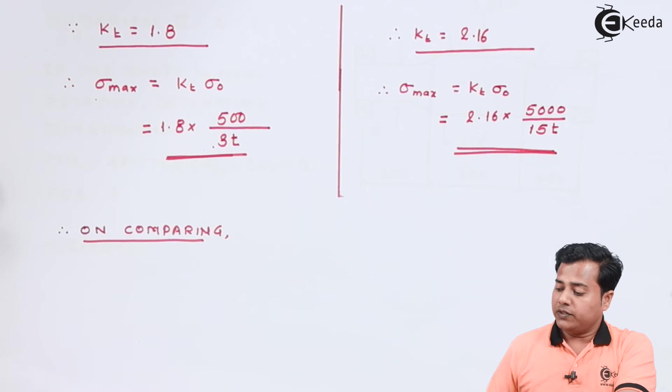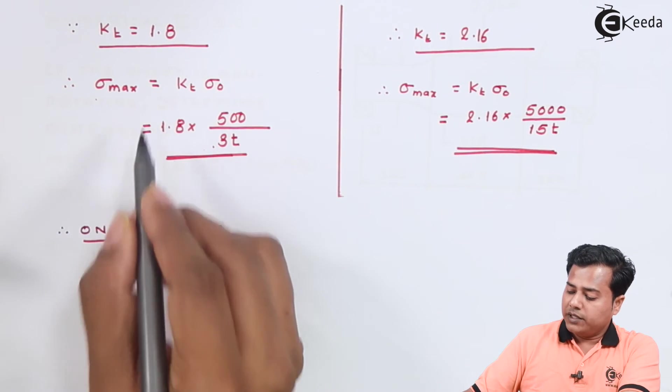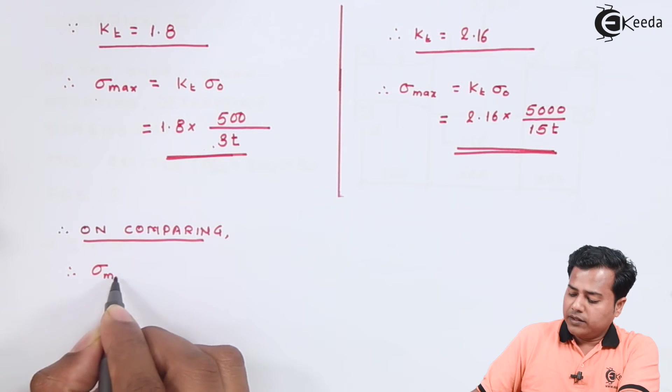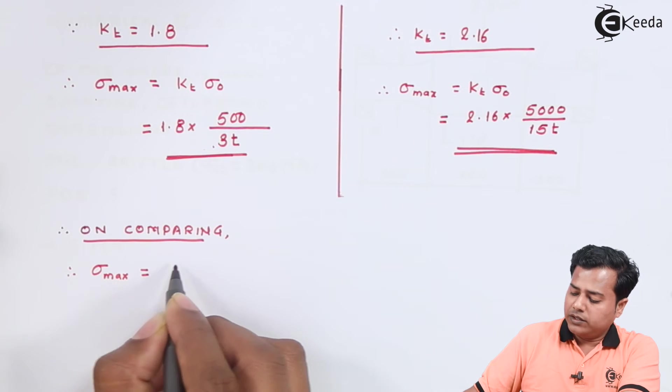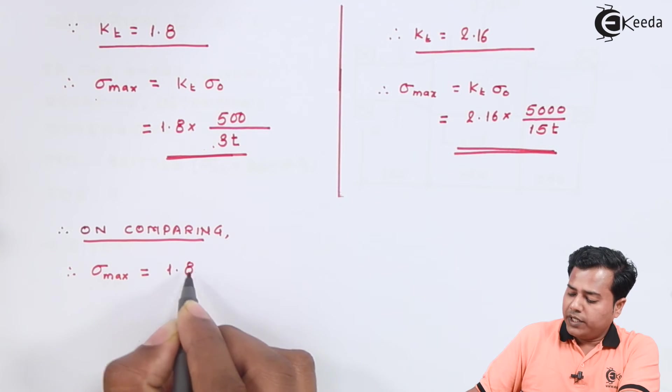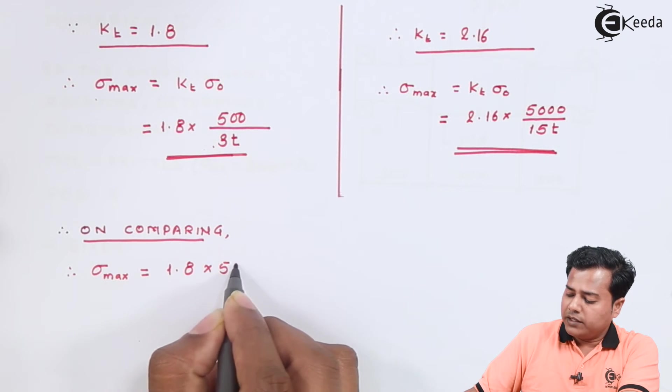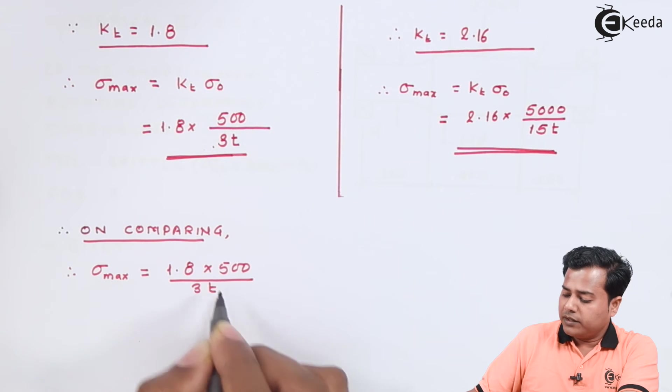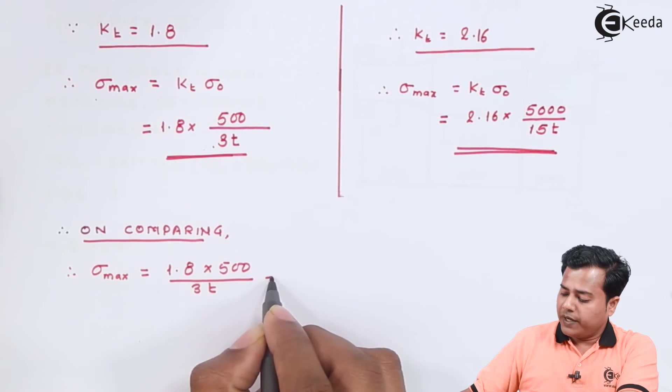And that's why it becomes the maximum stress which is 1.8 times 500 divided by 3t which if we evaluate it becomes 300 divided by t.